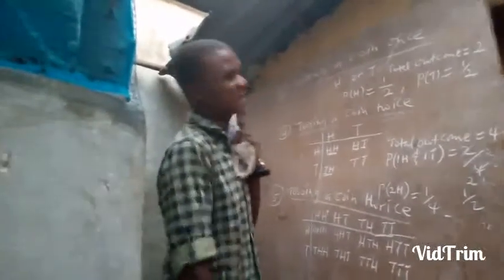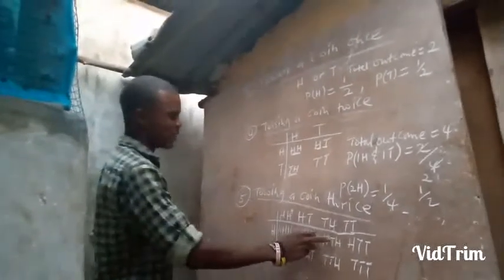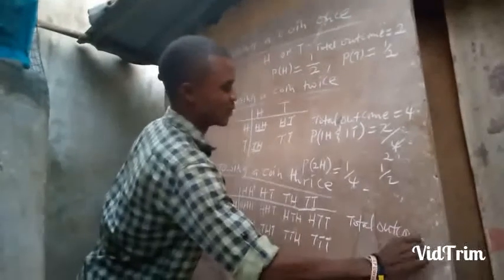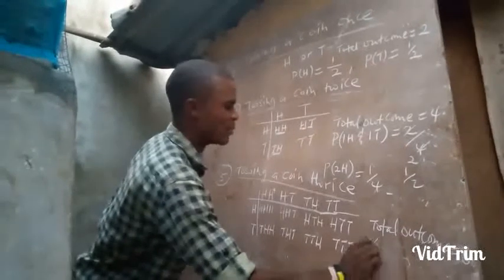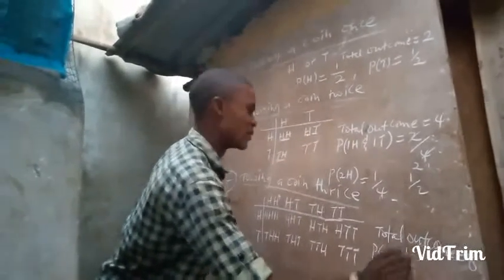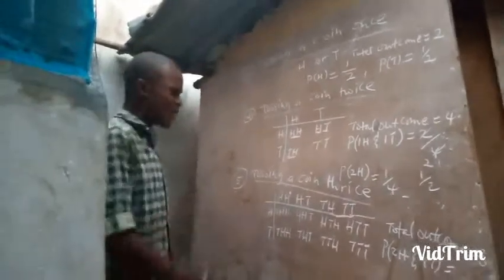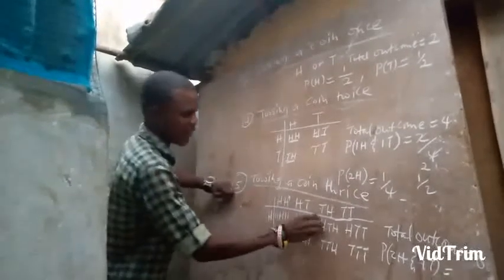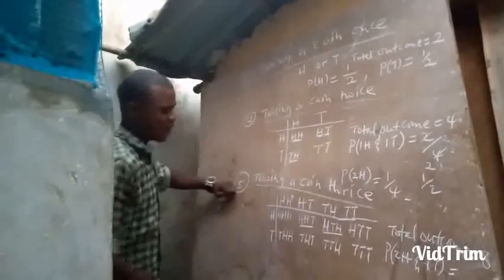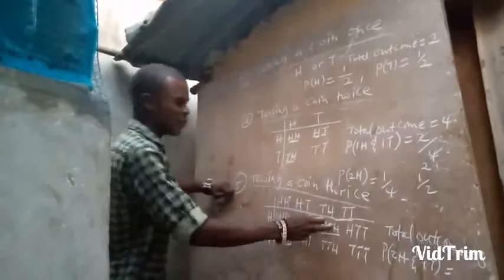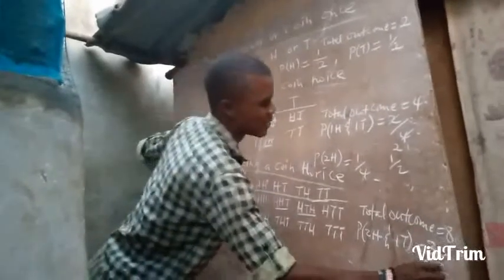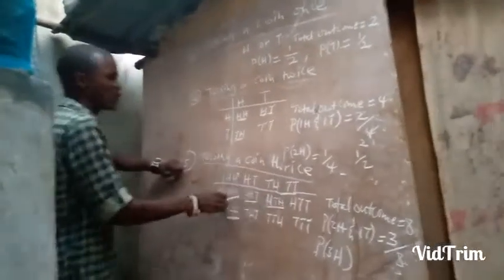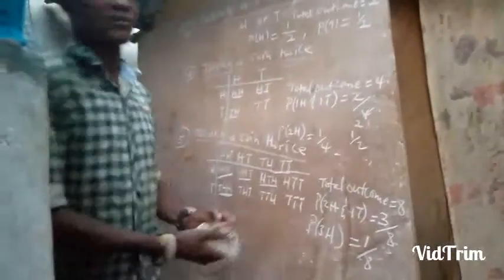If somebody says find the probability of two heads and one tail: you can get HHT, HTH, and THH — that is three combinations. So the probability is 3 divided by 8. If somebody says find the probability of three heads: HHH occurs only once, so the probability is 1 over 8.